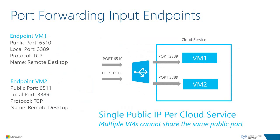Let's dig deeper and look at how input endpoint port forwarding works. To allow traffic to reach a specific virtual machine, you define an endpoint. Using Remote Desktop as an example: since there is only one public IP address per cloud service, but you need to reach each individual virtual machine on port 3389, the solution is to create an endpoint for each virtual machine that listens publicly on a unique port and forwards traffic to the fixed internal port of the virtual machine. When traffic reaches public port 6510, it is forwarded to VM1 on port 3389. If traffic comes in on port 6511, it is forwarded to VM2 on port 3389.